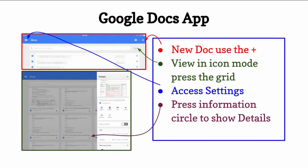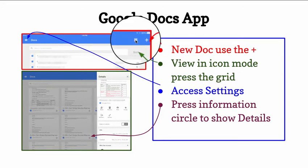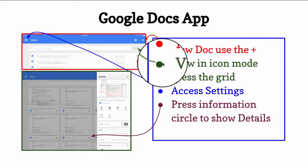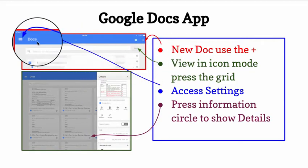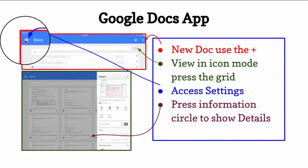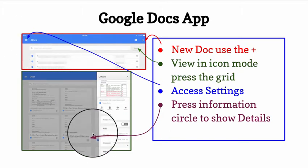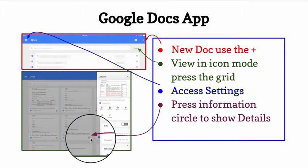Notice the folders with the silhouettes — that tells you that those folders are being shared. In the Google Docs app, to create a new doc, you simply click on the plus sign. You can view in icon mode by pressing on the grid. Access the settings under the three lines, and press on the eye for more information under the details.